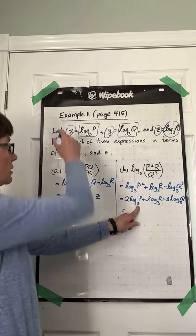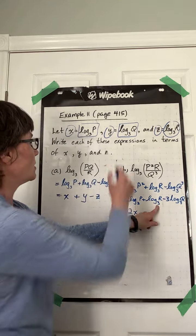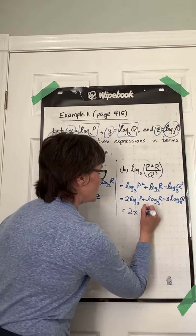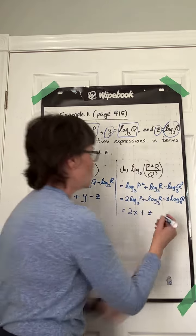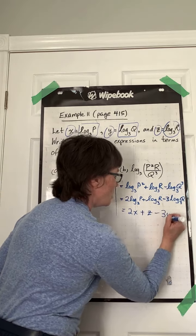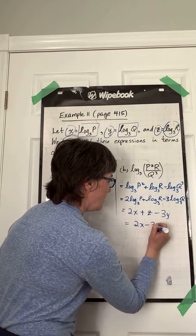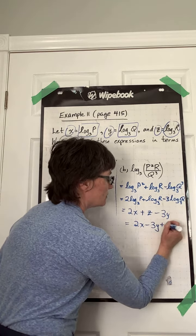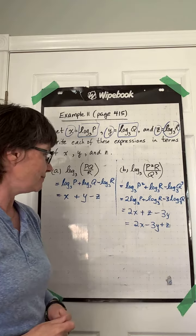Log base 3 of p is x, so we have 2x. Log base 3 of r is z, so we have z. And log base 3 of q is y, subtract 3y. And just to make it a little more correct, put those variables in alphabetical order. And there you have it.